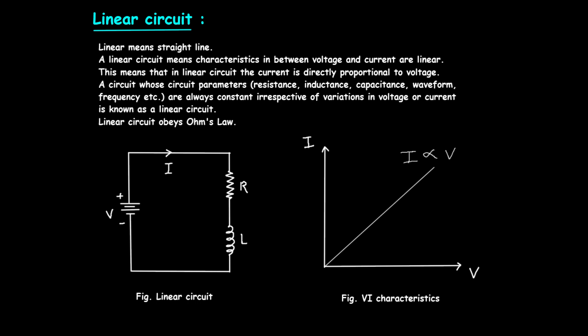Let's look at a simple example of a linear circuit. In the diagram, we have a circuit consisting of a voltage source, V, a resistor, R, and an inductor, L. When the voltage is applied to the circuit, current flows through the resistor and inductor. Because the component's values do not change, the relationship between voltage and current remains linear.